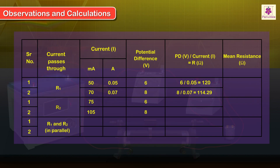Observations and Calculations: For potential difference 6 volts, a current of 75 mA, that is 0.075 A, flows through the circuit. Calculate the value of R2 by applying Ohm's law. For the first set of readings, R2 is equal to 6 upon 0.075, which is equal to 80 ohms.